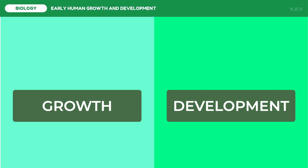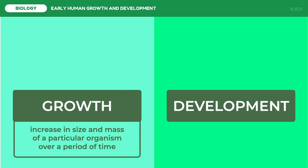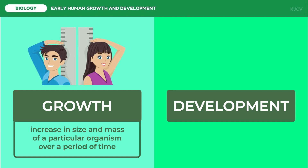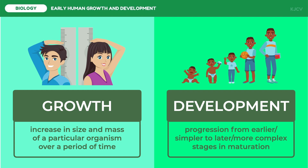Growth and development may sound synonymous to each other, but these are actually different terms. Growth refers to the increase in size and mass of a particular organism over a period of time — this is when one becomes bigger. Development, on the other hand, means the progression from simpler to more complex stages in maturation, going beyond the physical aspect. For example, our brain begins to process more information as we age — this is called development.